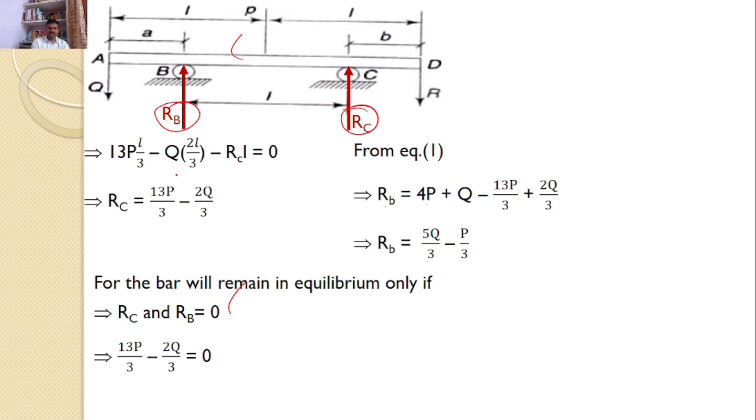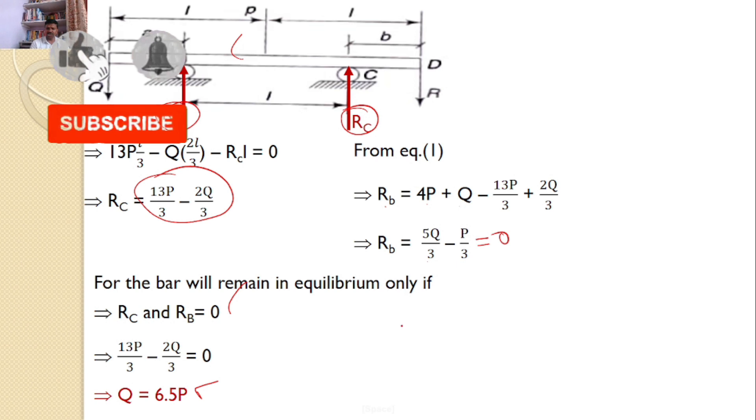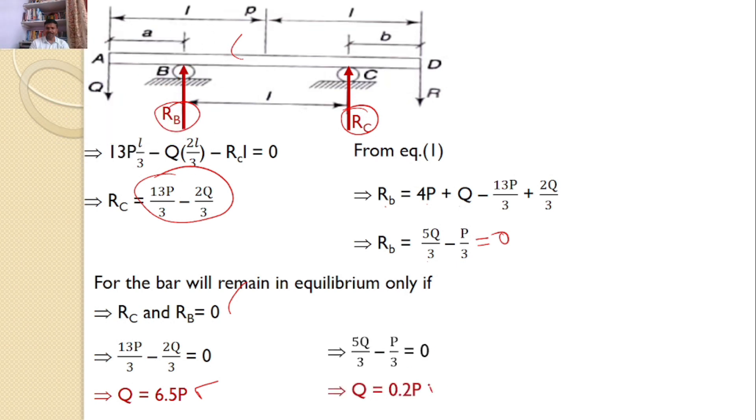Now, RC equals 0 means 13P by 3 minus 2Q by 3 equals 0, or Q equals 6.5P. Similarly, RB equals 0 means 5Q by 3 minus P by 3 equals 0, giving Q equals 0.2P.